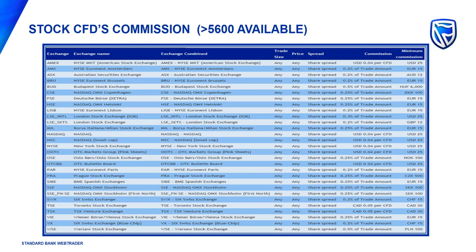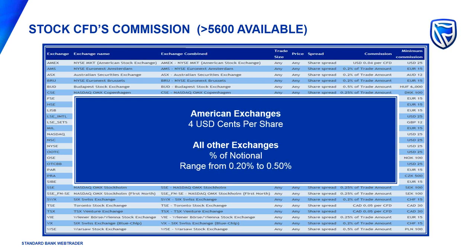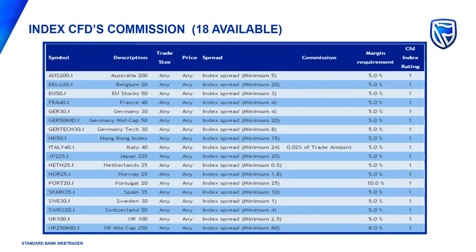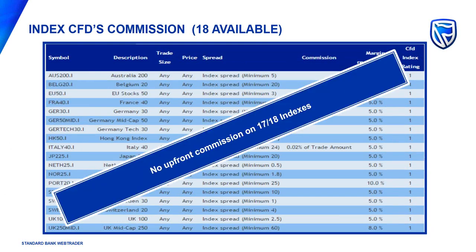For stock CFD commission, it's $0.04 per CFD in the U.S. market with a minimum charge of $25, varying across different exchanges. For index CFDs, there are about 18 available on the platform, and 17 of them have no upfront commission — you trade purely the difference between the buying and selling price. This allows you to take a view on markets such as Euro Stoxx, Germany Top 30, or the Nikkei.